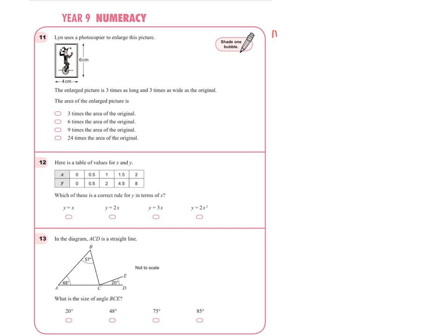Question 11: Lynn uses a photocopier to enlarge a picture — she wants to make it bigger so it looks more like a square. The original picture is 6 by 4. The enlarged picture is three times as long and three times as wide, so four times three is twelve and six times three is eighteen.